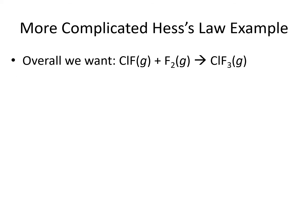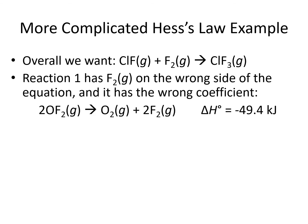The next part of our equation that we want to make sure is correct is the F2. We find F2 only in reaction number 1, but it is on the wrong side of the equation and has the wrong coefficient. We want it to be on the left, but it's on the right. And we want it to have a coefficient of 1, but it has a coefficient of 2. We need to fix both of those things.